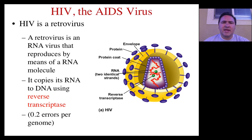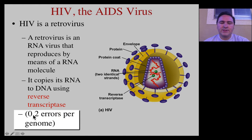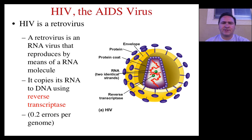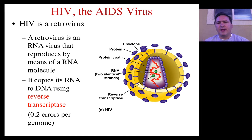It turns out that reverse transcriptase is not very accurate at transcribing — retro-transcribing from RNA to DNA. It makes lots of mistakes, many more than RNA polymerase, for example. If you think about it, 0.2 errors per genome means basically 20% of all new viruses produced have some type of mutation. And this is what makes HIV so dangerous — it is a fast-evolving virus, constantly producing new forms of itself that doctors have a hard time coming up with ways to deal with.